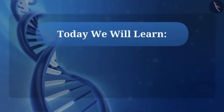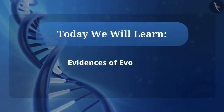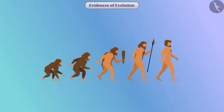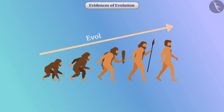Today we will learn about evidences of evolution. There are various species around us and they are evolving at a slow rate. Evolution is the result of the accumulation of variations over many generations. Several proofs can be given about evidence of evolution. Let's understand them.